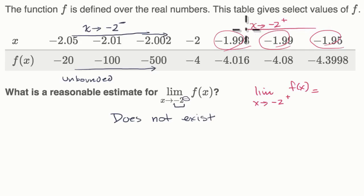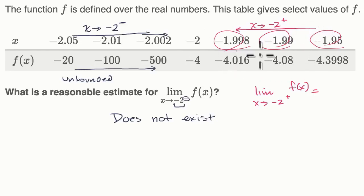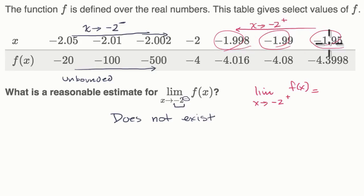And remember, when you're looking at a limit, sometimes it might be distracting to look at the actual value of the function at that point. So you want to think about what is the value of the function approaching as your x is approaching that value — in this case, negative 2 from the right.